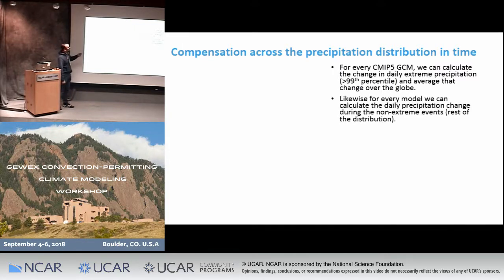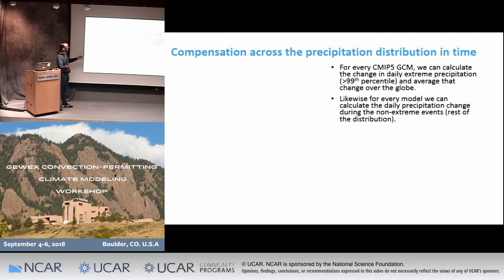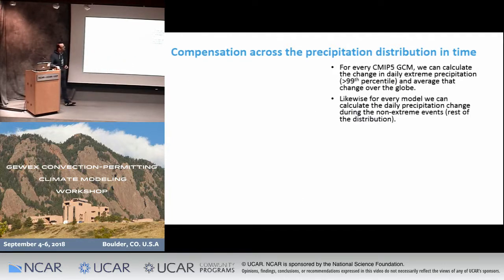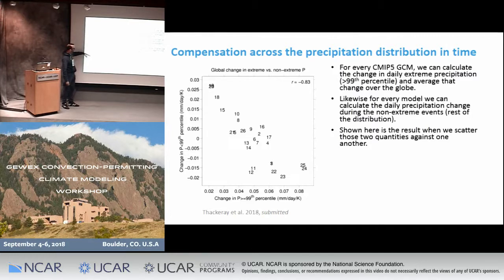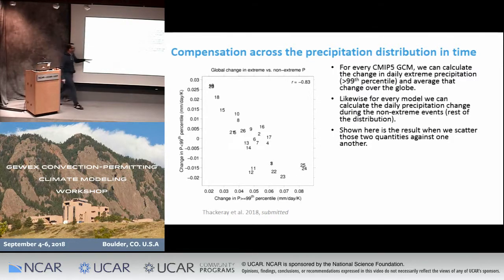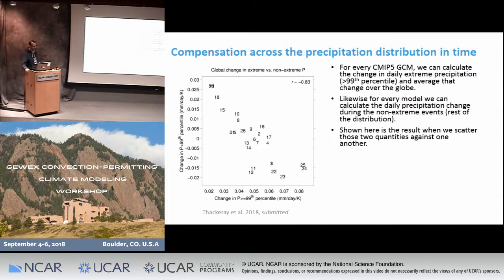For every GCM you can calculate the change in daily extreme precipitation, defined at the 99th percentile, and average that over the whole globe. We can also calculate the change in daily precipitation during non-extreme precipitation events — the rest of the distribution. When we scatter these two quantities against one another, the result is really fascinating: the models fall on an inverse relationship. If a particular model has a big increase in extreme precipitation, it has actually a decrease in non-extreme precipitation — and vice versa.